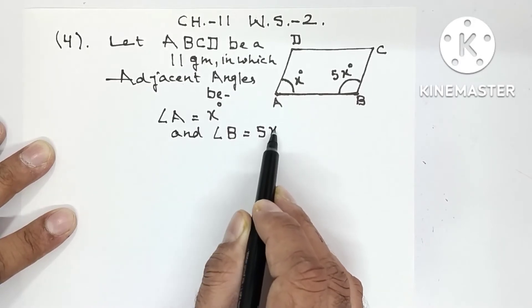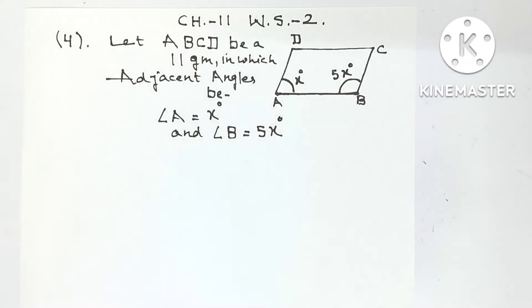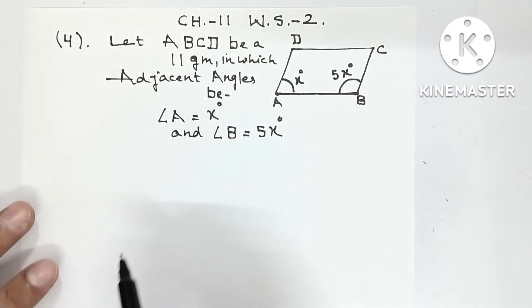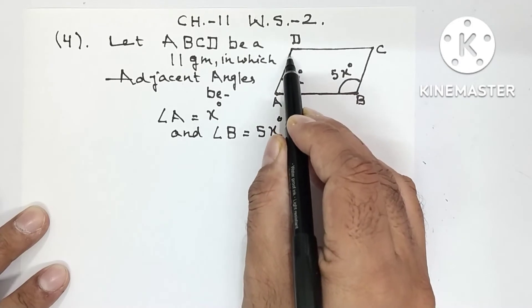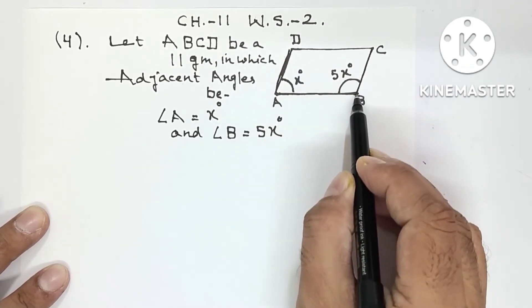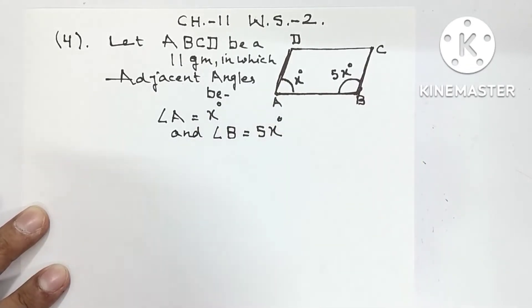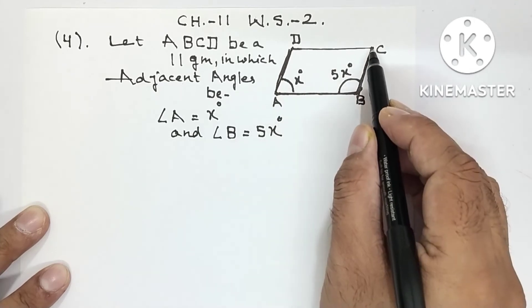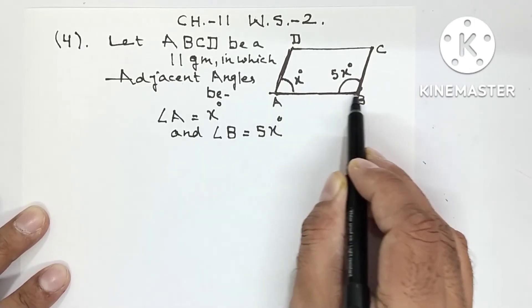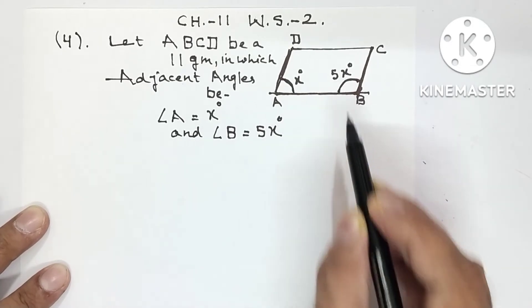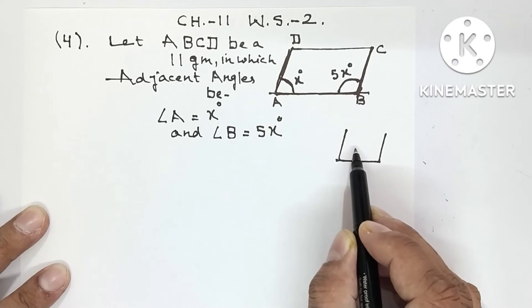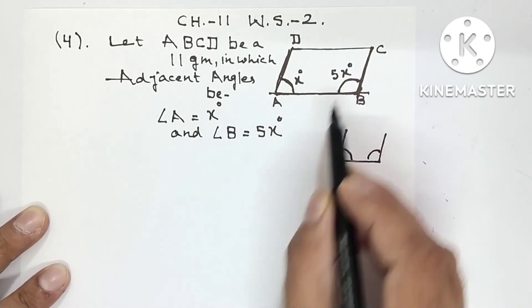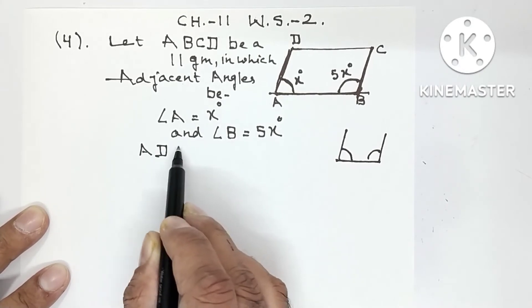I have taken X and 5X because the ratio of the two adjacent angles given is 1:5. Now we need to find all angles of the parallelogram. Notice that AD and BC are parallel because this is a parallelogram — opposite sides of a parallelogram are parallel. So AD is parallel to BC, and AB acts as a transversal.